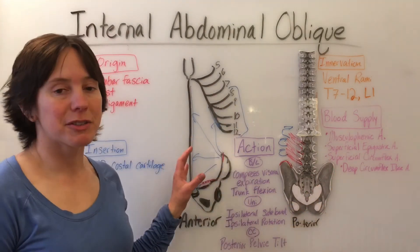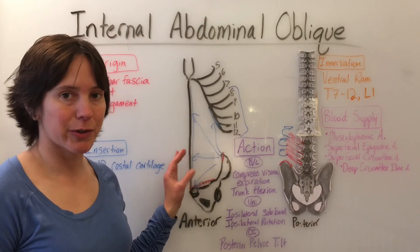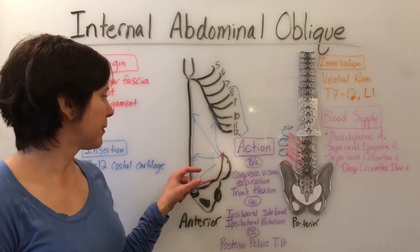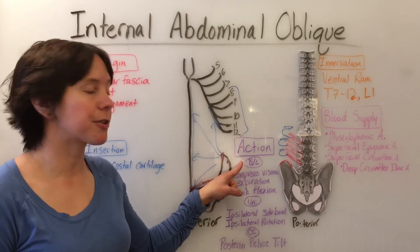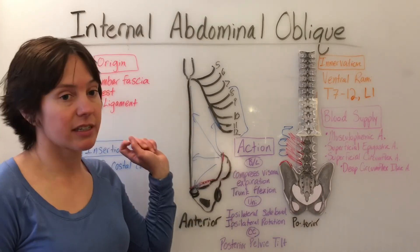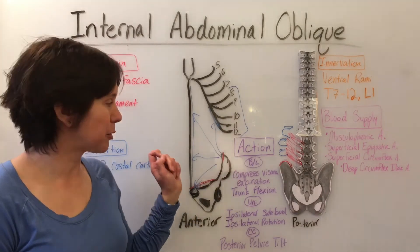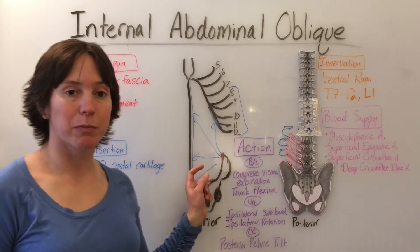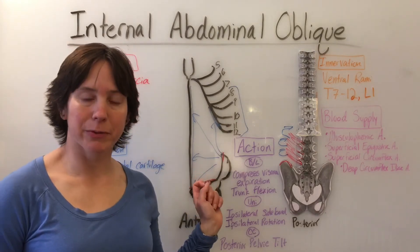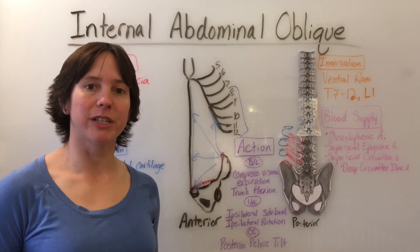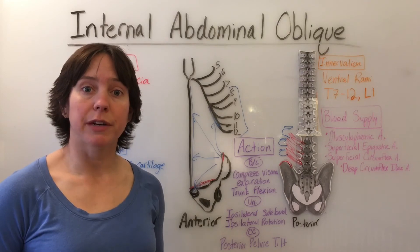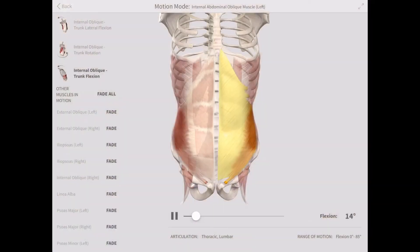The actions for the internal abdominal oblique are the same bilaterally as the external abdominal oblique, where it compresses abdominal viscera, aids in expiration, and helps with trunk flexion.